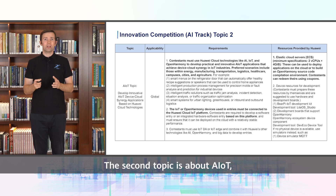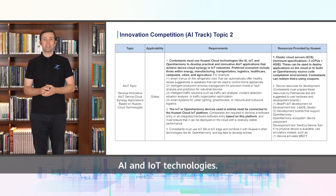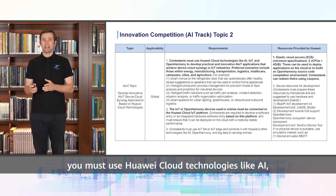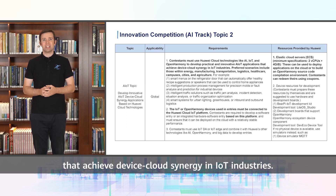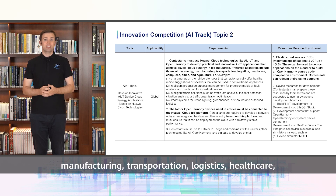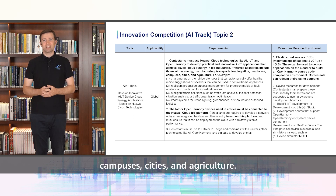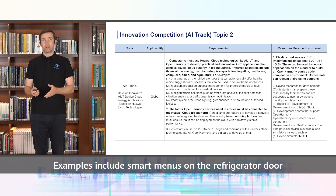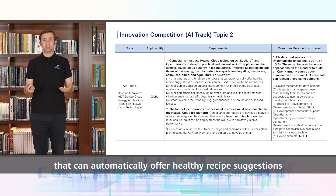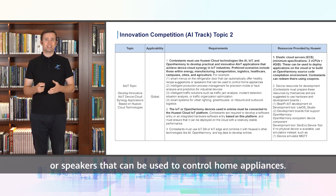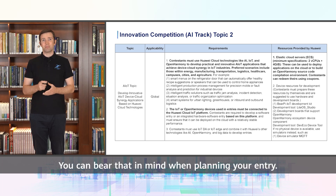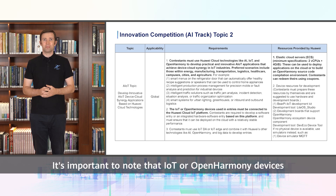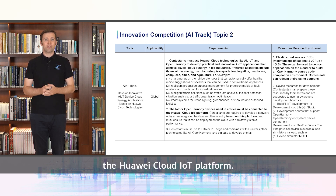The second topic is about AIoT, which focuses on the convergence of AI and IoT technologies. For this, you must use Huawei cloud technologies like AI, IoT, and Open Harmony to develop practical and innovative AIoT applications that achieve device-cloud synergy in IoT industries. Preferred scenarios include those within energy, manufacturing, transportation, logistics, healthcare, campuses, cities, and agriculture. Examples include smart menus on the refrigerator door that can automatically offer healthy recipe suggestions, or speakers that can be used to control home appliances. Note that these examples are all very focused use cases, which you can bear in mind when planning your entry. IoT or Open Harmony devices used in entries must be connected to the Huawei Cloud IoT platform.